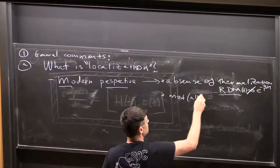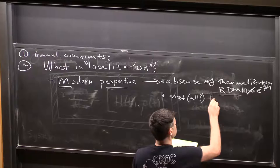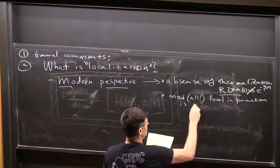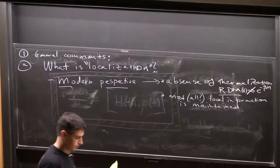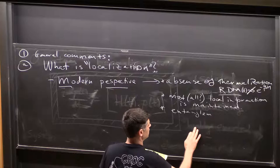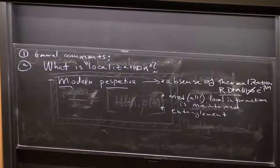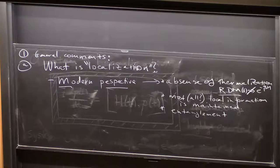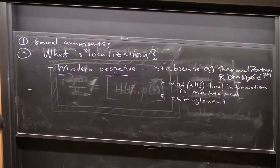Another modern aspect is that the localized systems we know best are the ones where all of the local information, the physical information, is retrievable or maintained on time evolution. Another modern perspective is that there are sharp signatures of absence of thermalization or presence of localization in entanglement properties of time evolution or even eigenstates.